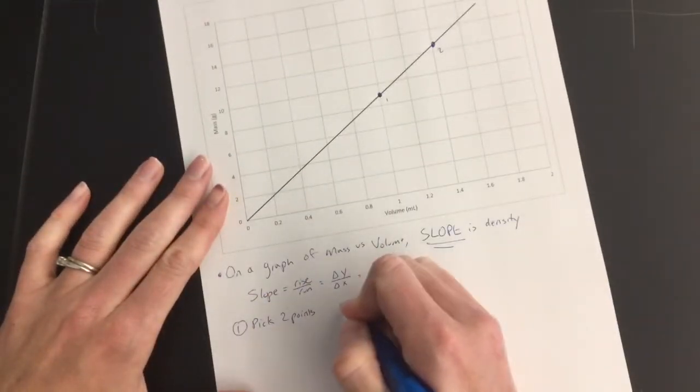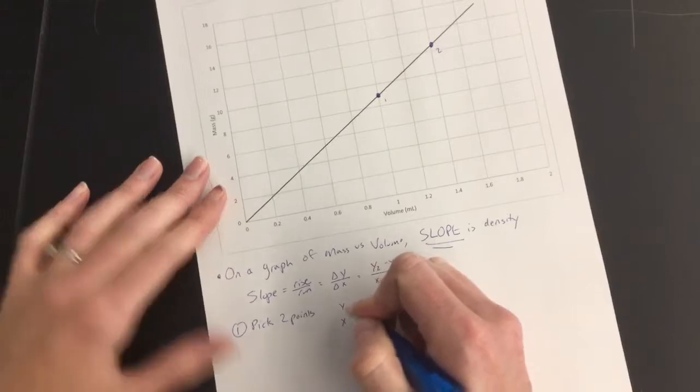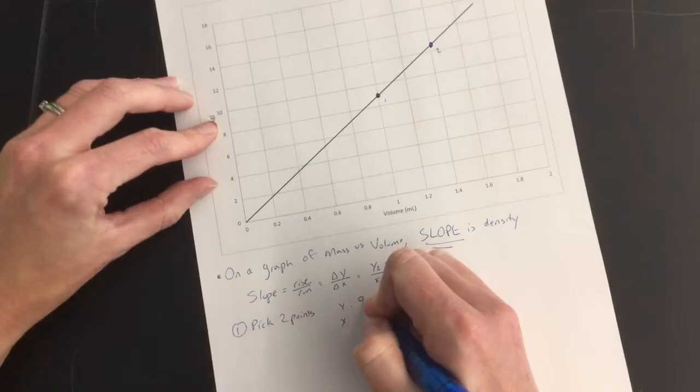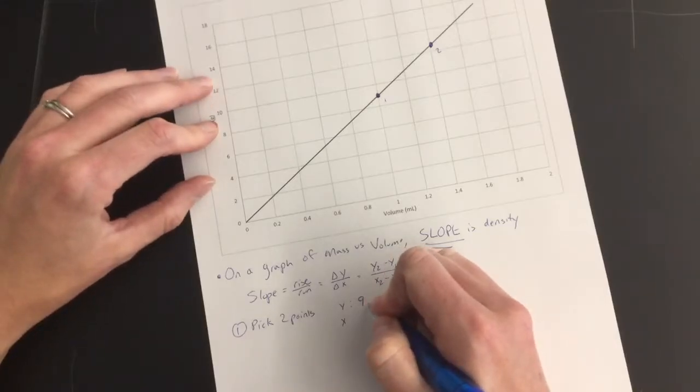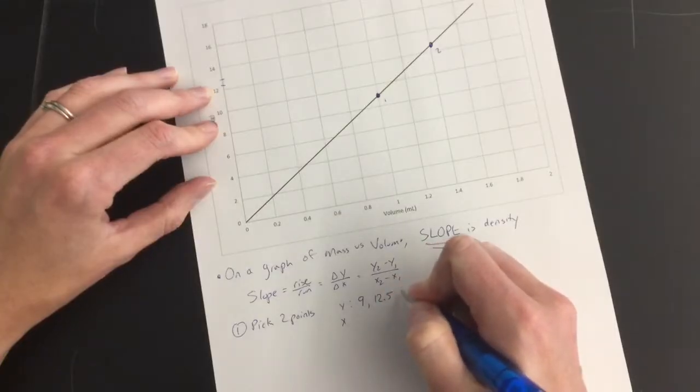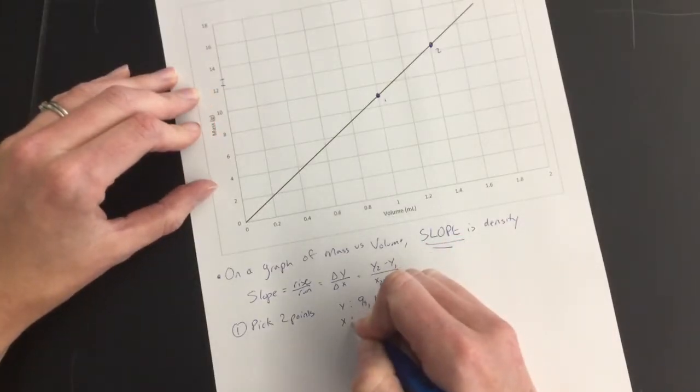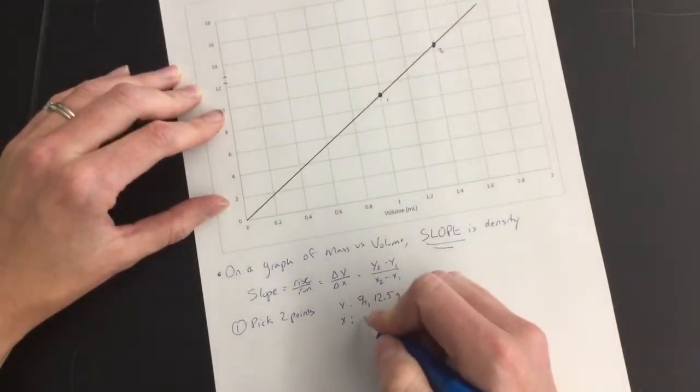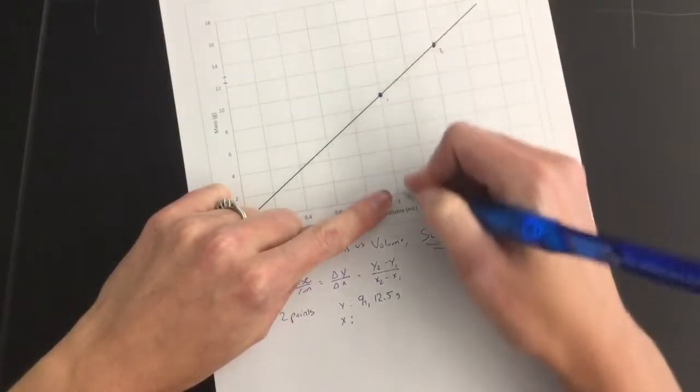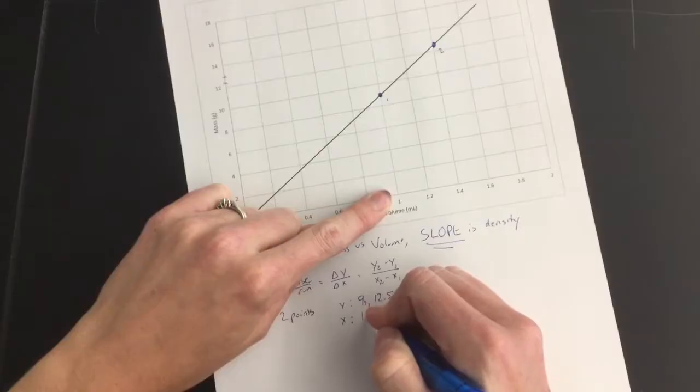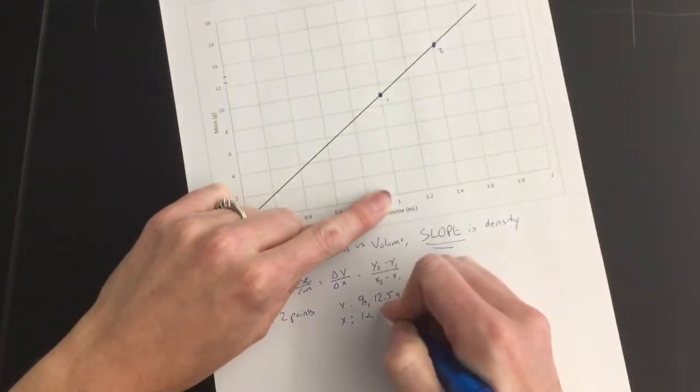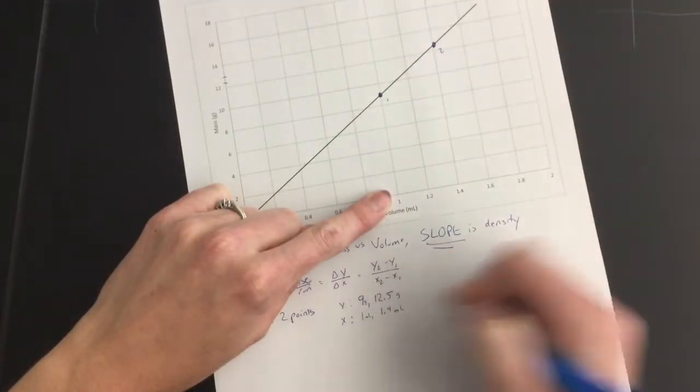Then, I'm going to put my y's together and my x's together. My y's, I've got, that's right in the middle, so that's 9, and that's not quite, that's like not here but here, so that would be 12 and a half, 12.5, and those are both grams. And then on my x's, I've got 1.9 and 1 milliliter. And then I've got here, that's 1.4, so I'll go with 1.4 milliliters.